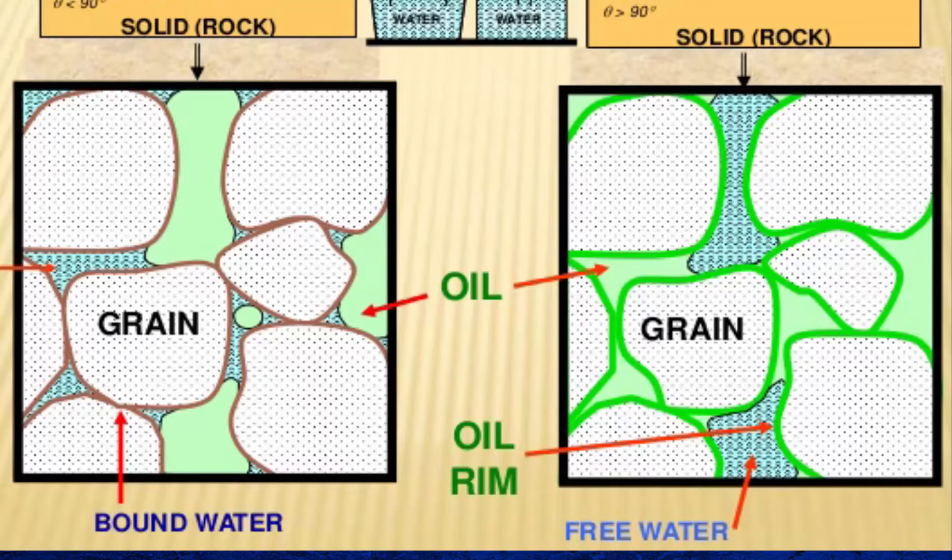In contrast, limestones and dolomites are usually oil-wet. That is to say, oil coats the rock's surface. The percentage of oil recovery tends to be greater in sandstone reservoirs than in limestone reservoirs. This is simply because the fluid in the center of the pore will flow easier than the fluid on the outside of the pore that is being held to the rock by surface tension.